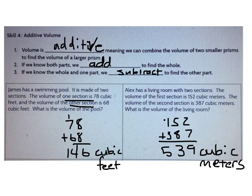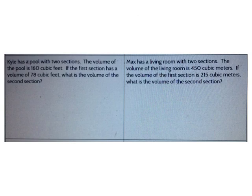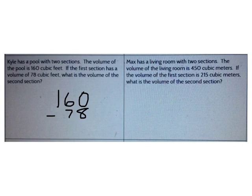Sometimes we'll be given the total and one of the parts. Kyle has a pool with two sections. The volume of the pool is 160 cubic feet. If the first section has a volume of 78 cubic feet, what is the volume of the second section? I know the total and one of the parts, so I need to subtract: 160 minus 78.